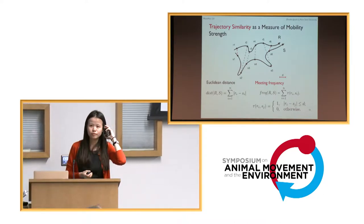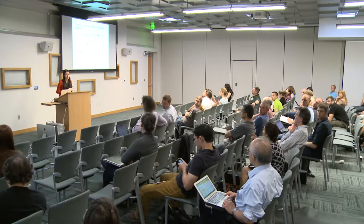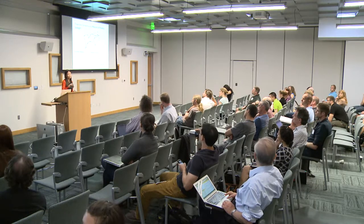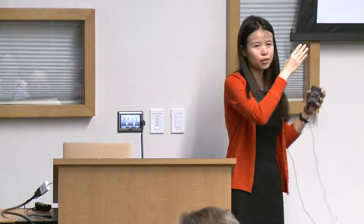A question was raised about what happens if sampling is not synchronized — if animals don't have the same number of data points. There are two approaches: one is linear interpolation to fill in missing points and make them synchronized; another is dynamic time warping, which adjusts the alignment to match ahead and behind. But that's not the main focus today.